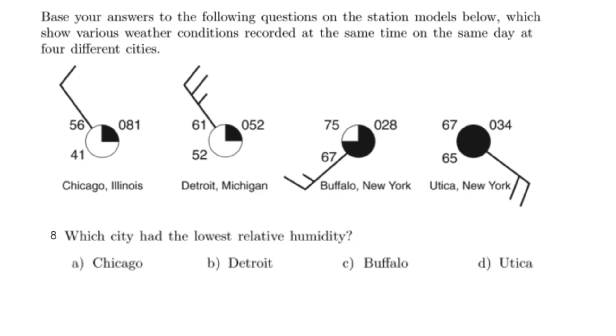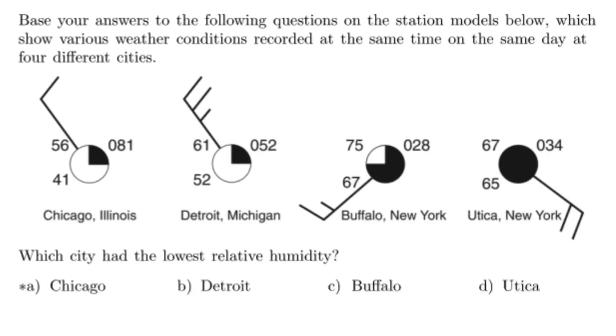Pause this video and try number eight. Which city had the lowest relative humidity? The correct answer is A, Chicago. Chicago has the lowest relative humidity because the air temperature is farthest away from the dew point, compared to all the other cities. Utica, notice, has the highest relative humidity because the air temperature is very close to the dew point. And that means that it's very likely to rain in Utica.